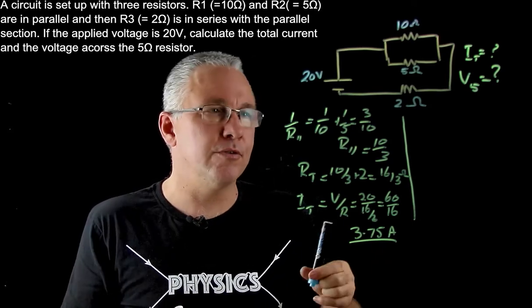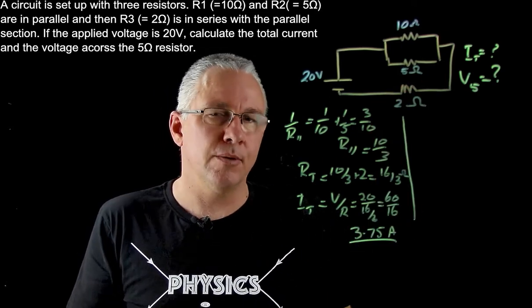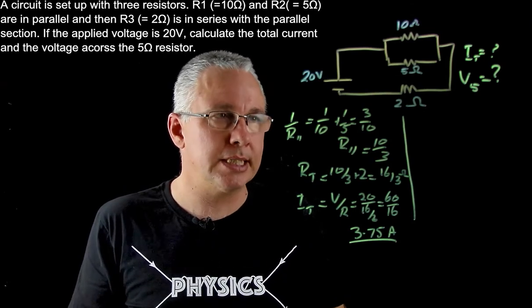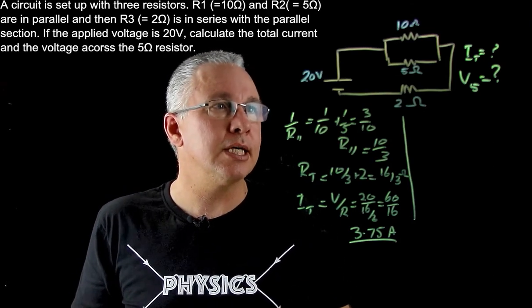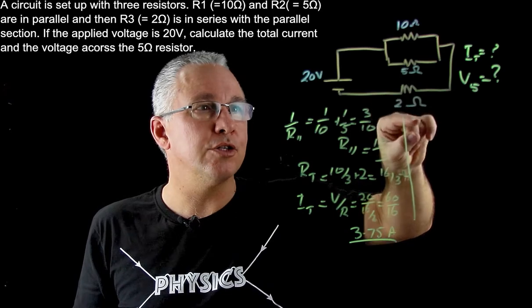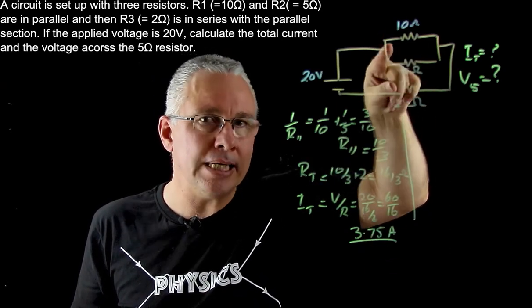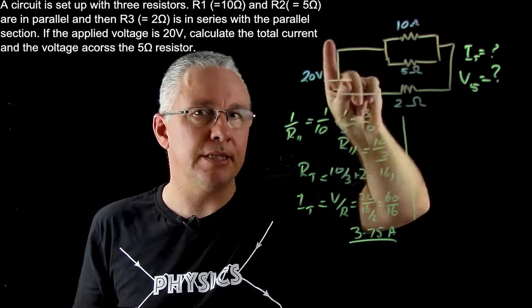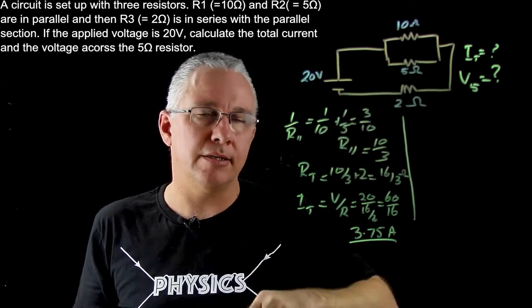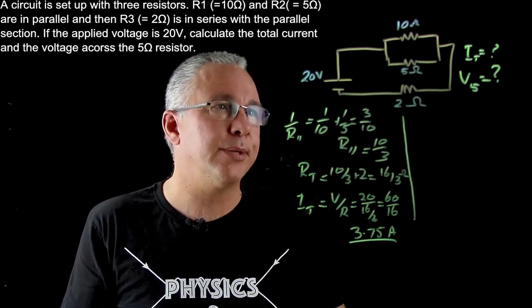Now what about the voltage across this section? Well, there's a couple ways you can go about doing this. One way is to work out the voltage drop here, and therefore the remaining voltage drop is going to be the difference between the drop here and the 20 volts. So that's one way of doing it.